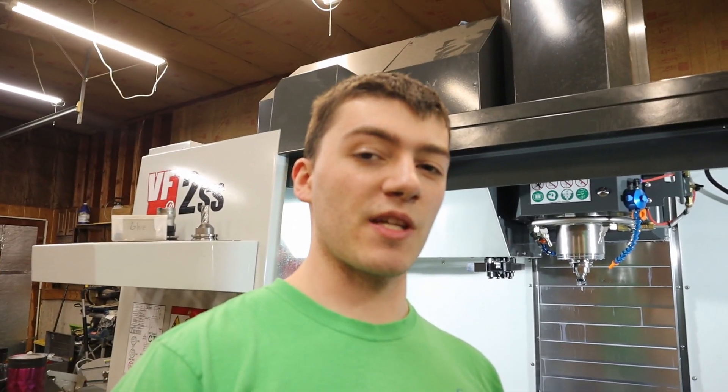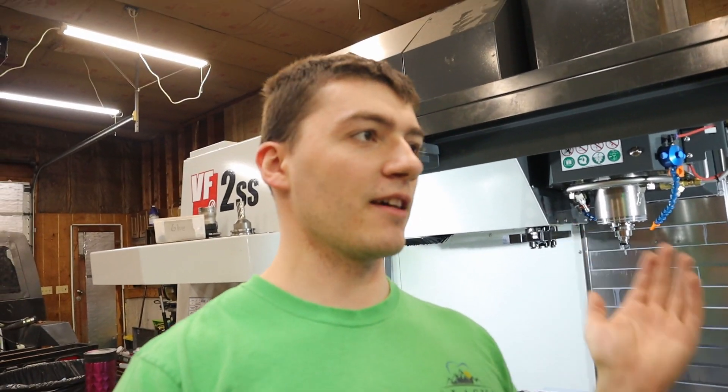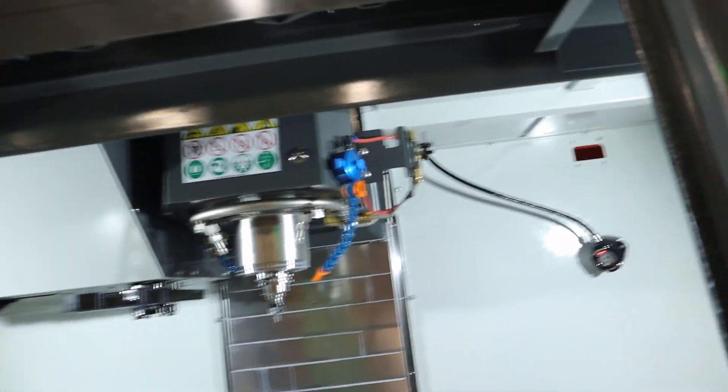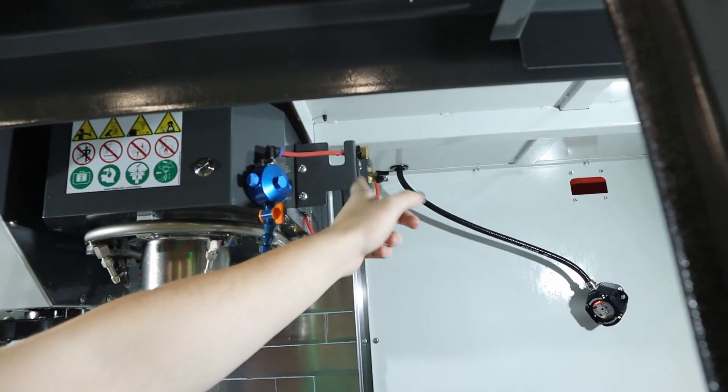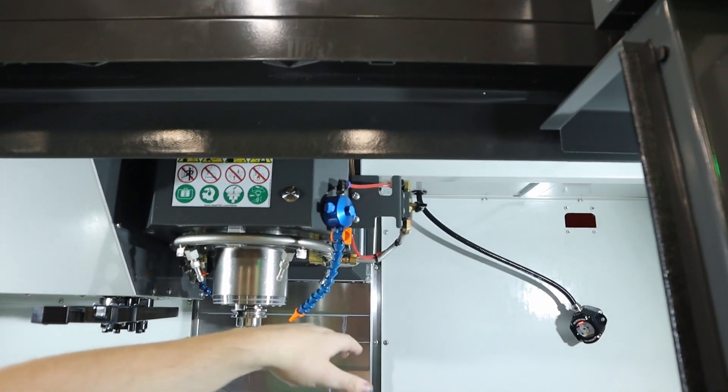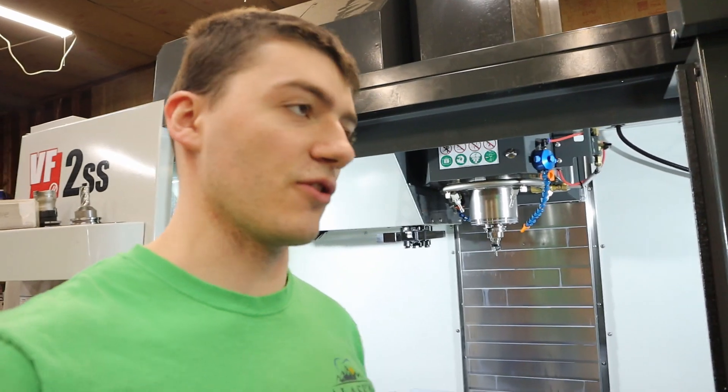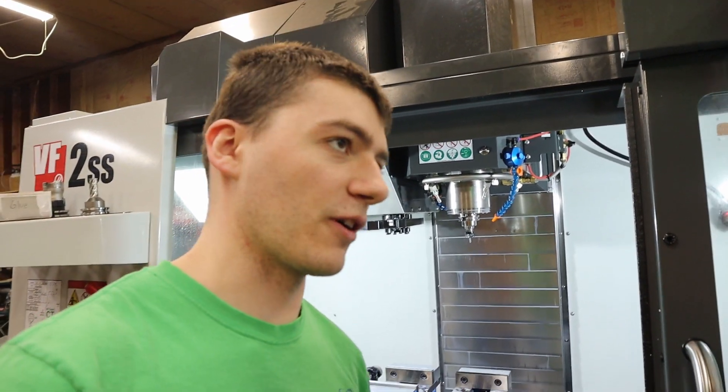When I bought my VMC, I didn't opt to add any air blast or anything. You can buy, there's a $900 option from Haas. It's for the auto air gun. It goes on this bracket here next to your coolant. And then it has this air solenoid. The air solenoid is literally just activated on air pressure. So it's nothing hydraulic or special or anything.